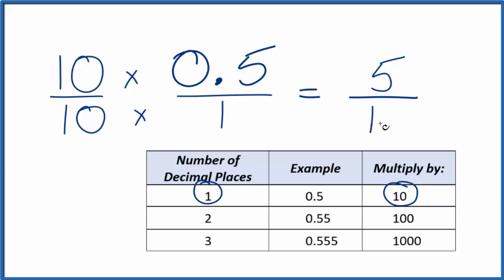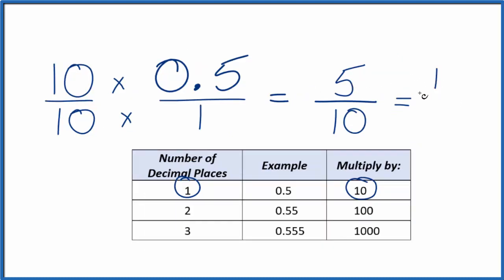10 times 1 is 10. And now we have our fraction, 5 over 10. We could simplify this because 5 goes into 5 one time, 5 goes into 10 two times. We end up with the fraction 1 half.